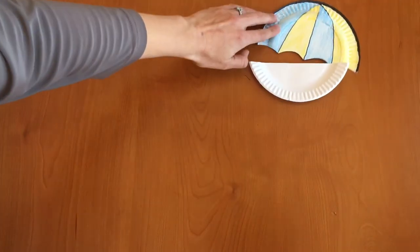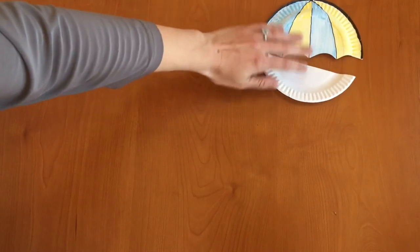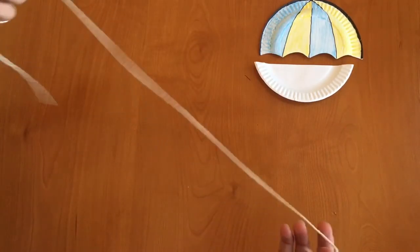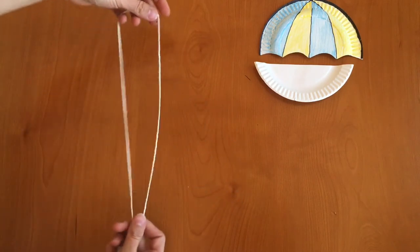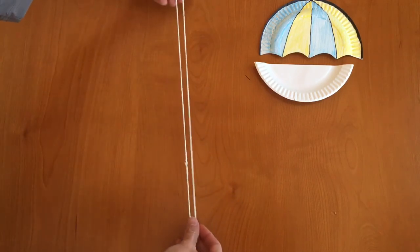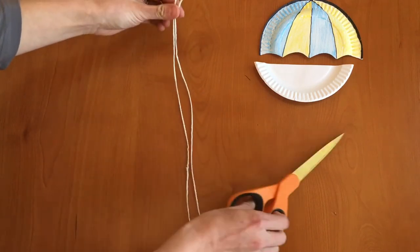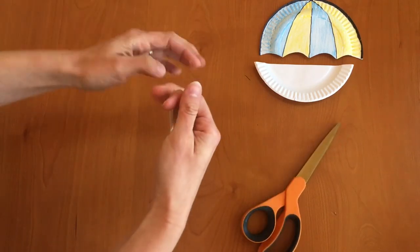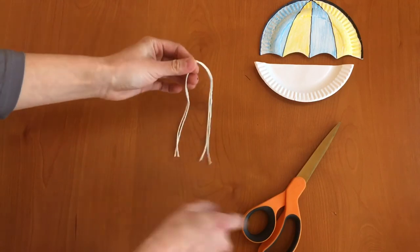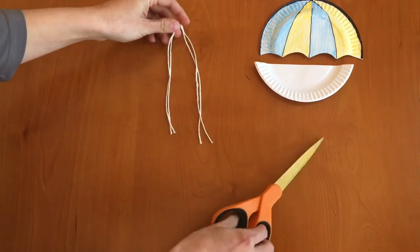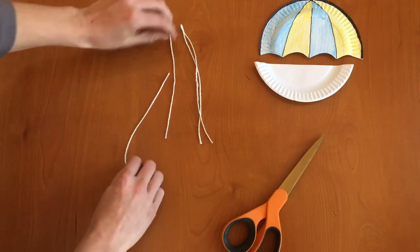We're actually going to put these aside for now and what we want to do next is take our length of string and we're going to cut it into four strings. So we'll take it in half and cut it in half, and then we'll take those pieces in half again and cut them in half. So now we have four pieces of equal length string.